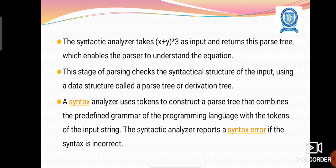The syntactic analyzer takes the statement x plus y star 3 and returns the parse tree, which enables the parser to understand the equation. This stage of parsing checks the syntactic structure of the input using the data structure called the parse tree. It is otherwise called the derivation tree. A syntax analyzer uses tokens to construct a parse tree that combines the predefined grammar of the programming language with the tokens of the input string.